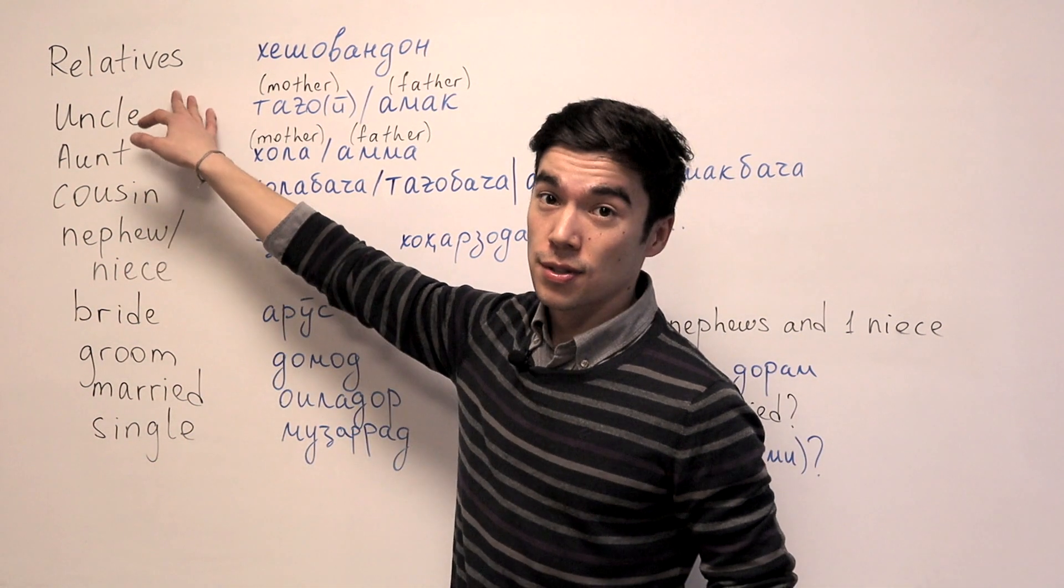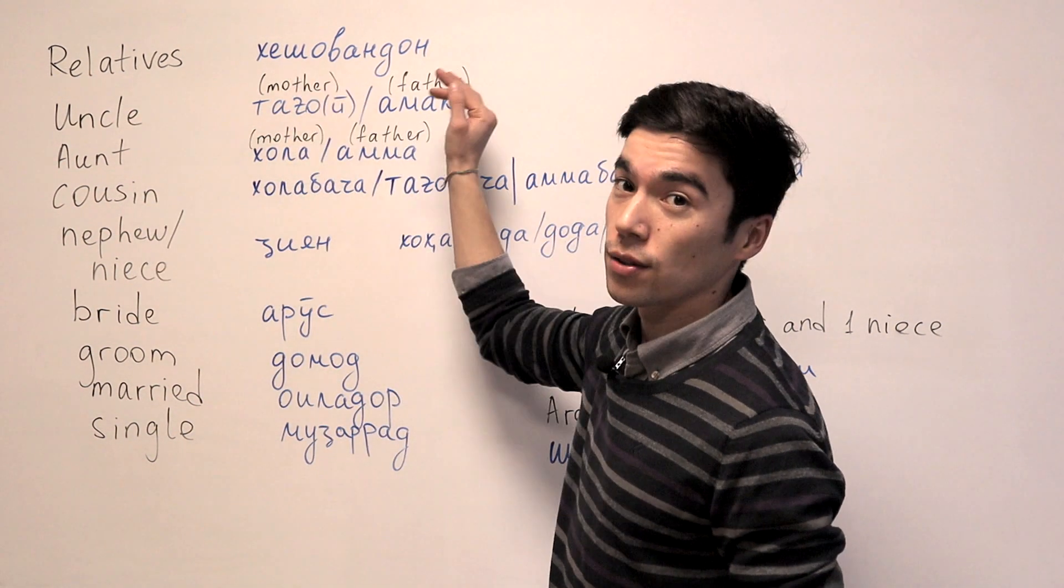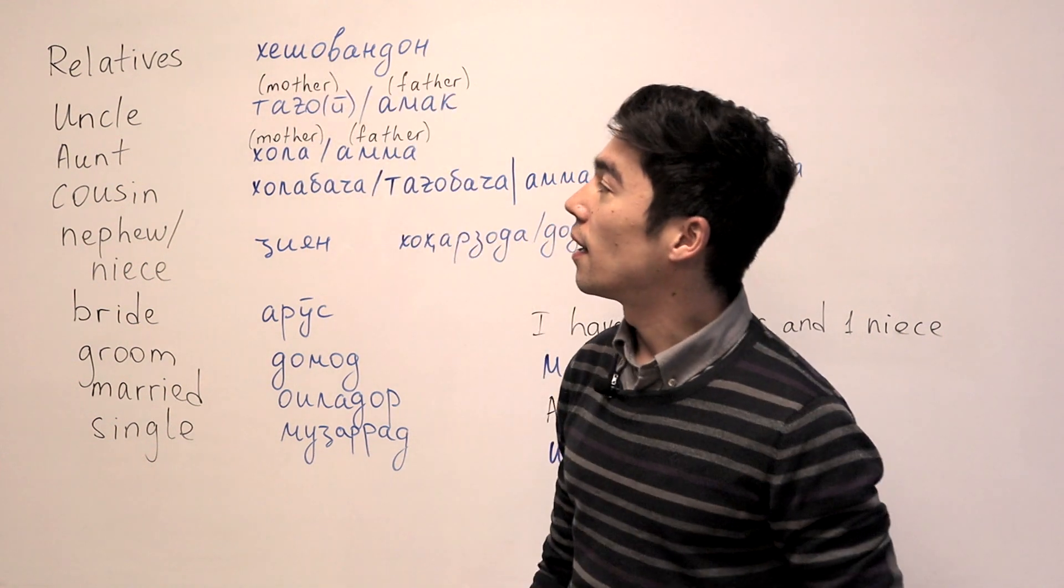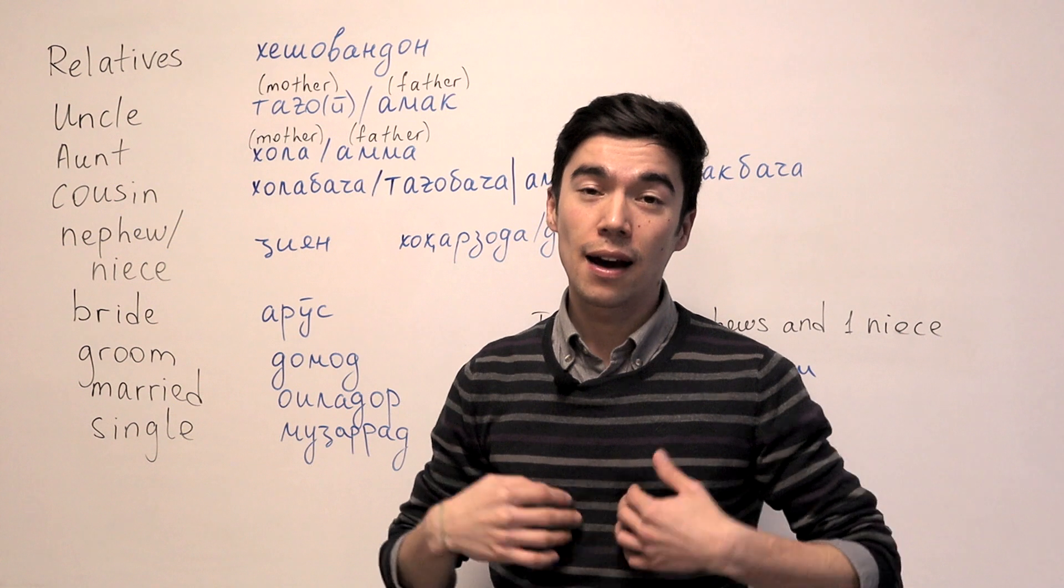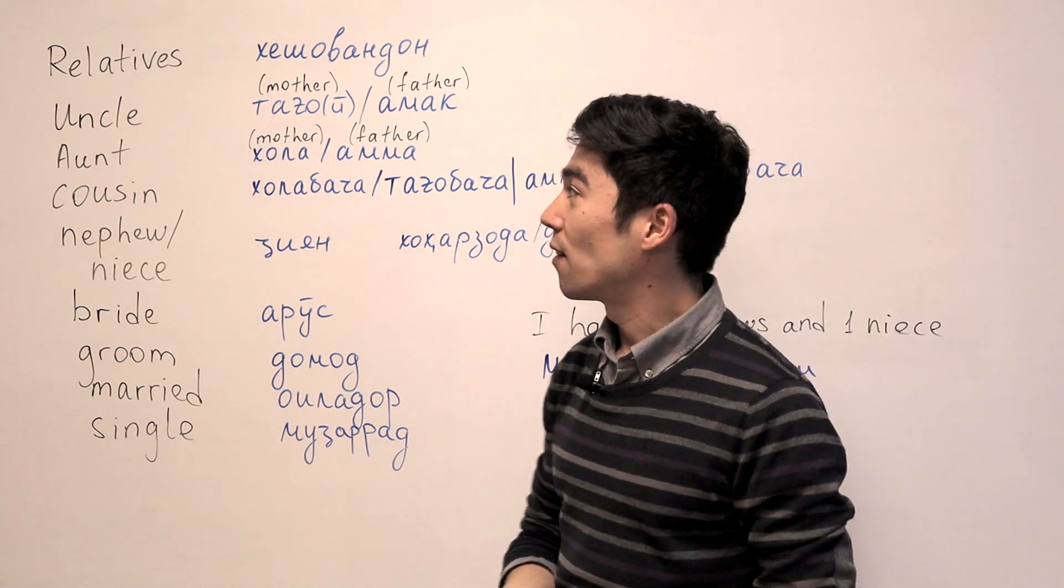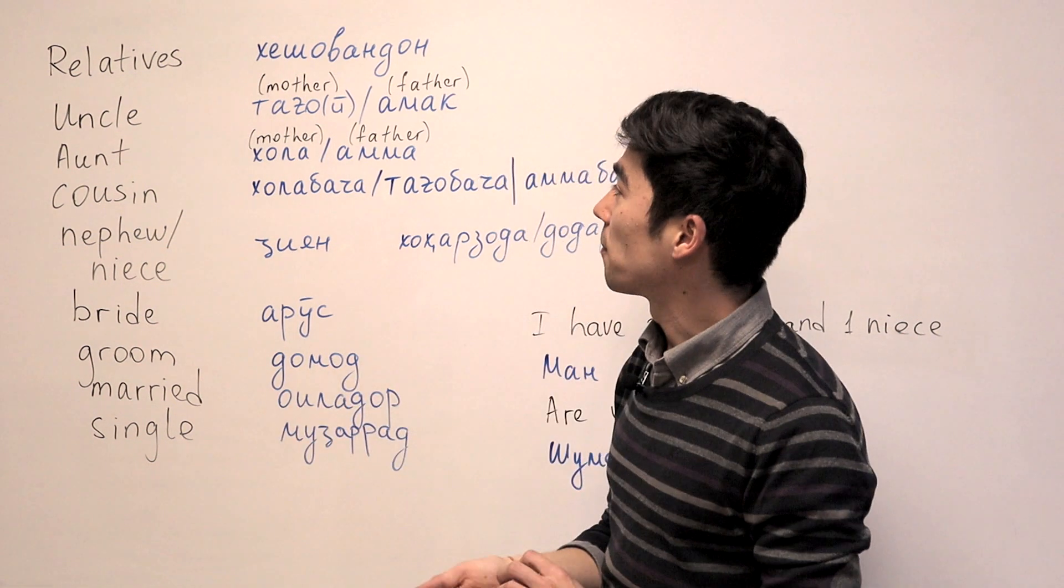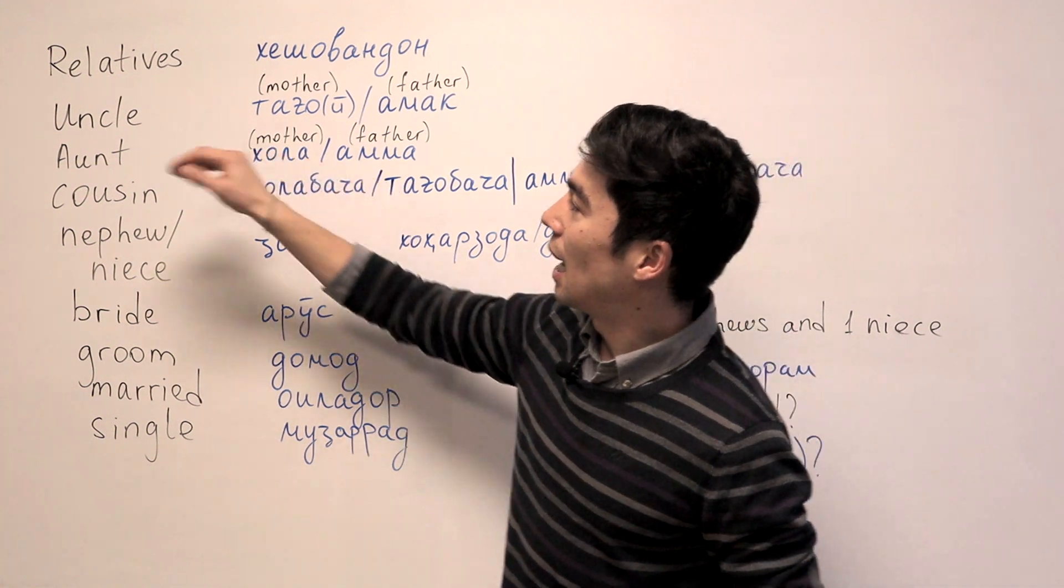Okay. Now let's talk about relatives. We say Kheshovandon. And in Tajikistan, we have a lot of relatives. I have 17 cousins from both sides, from mother's and father's side.